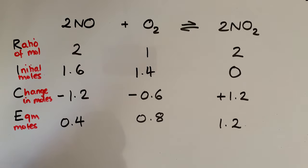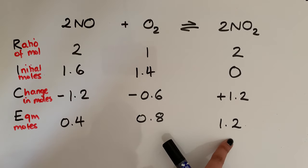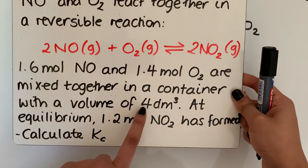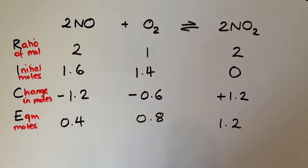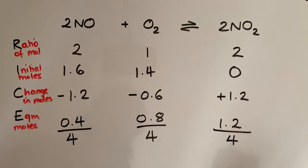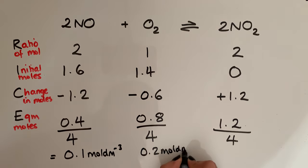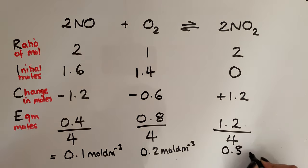We can nearly start plugging things into Kc, except Kc uses concentration, not moles. To go from moles to concentration — remember the units are moles per decimetre cubed — we divide everything by the total volume. The question stated the container had a volume of 4 decimetres cubed, so we divide everything by 4 dm³. This gives us: NO = 0.1 mol dm⁻³, O2 = 0.2 mol dm⁻³, and NO2 = 0.3 mol dm⁻³.